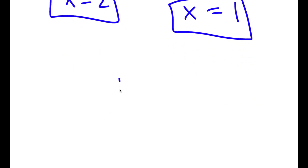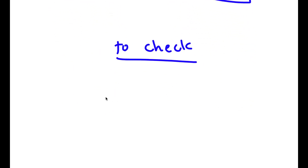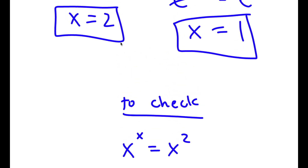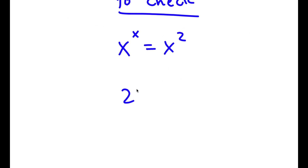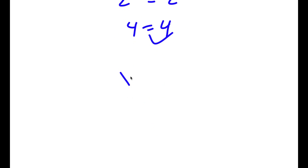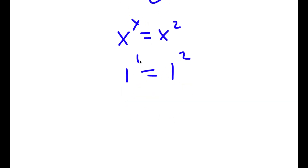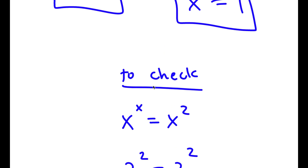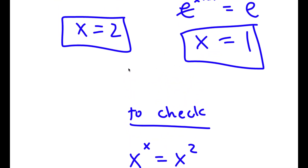So now to check — my original equation was x to the power of x is equal to x to the power of 2. First, if x equals 2, I get 2 to the power of 2, which is equal to 2 to the power of 2, meaning 4 equals 4, so this is right. Now if x is equal to 1, I get 1 to the power of 1 is equal to 1 to the power of 2. Both equal 1, so this is right as well, meaning both our solutions are correct.